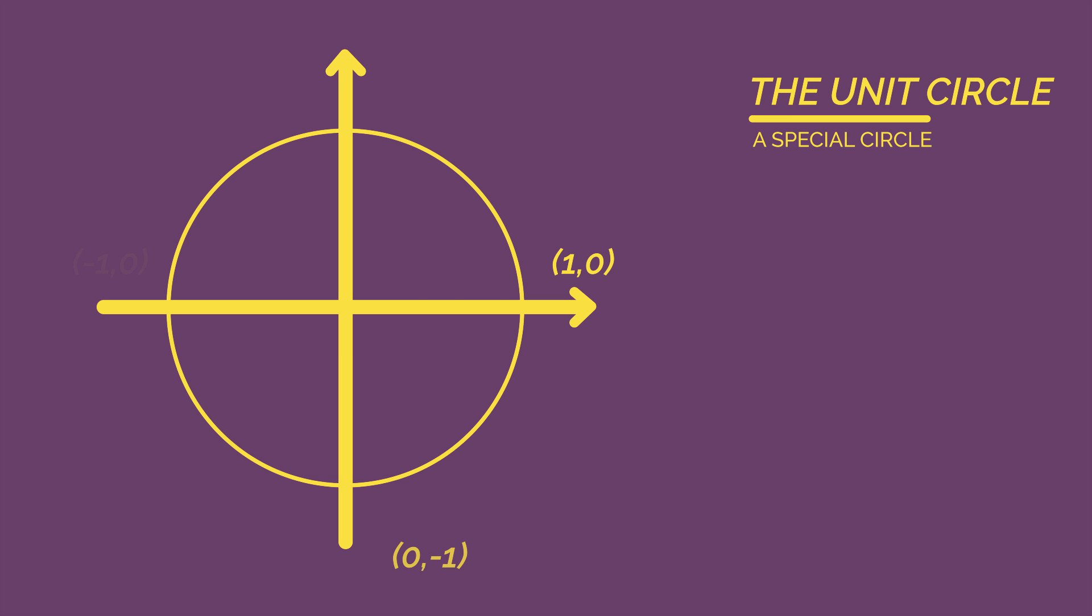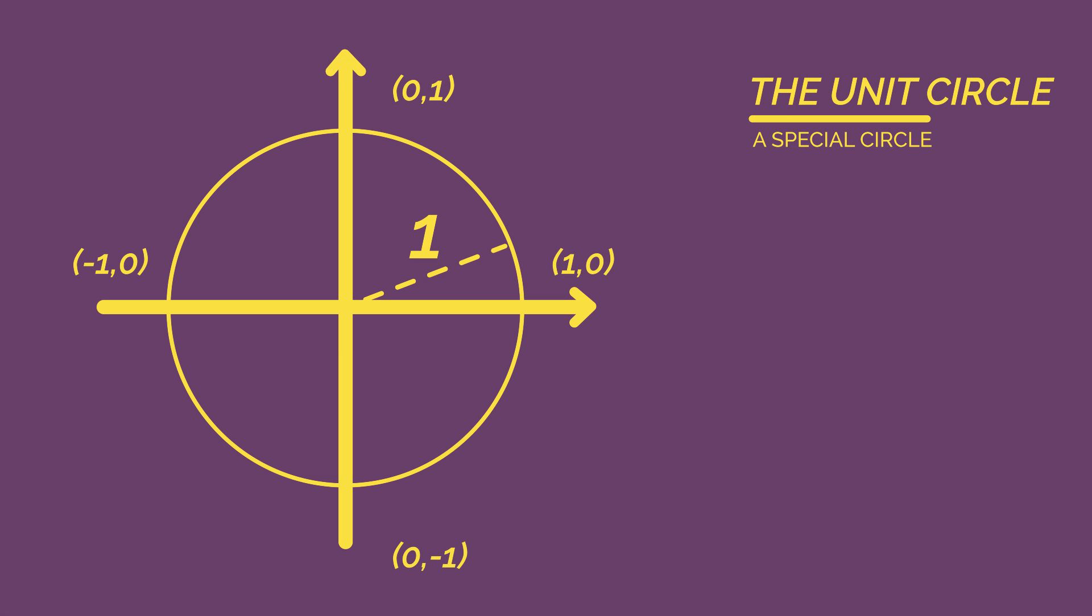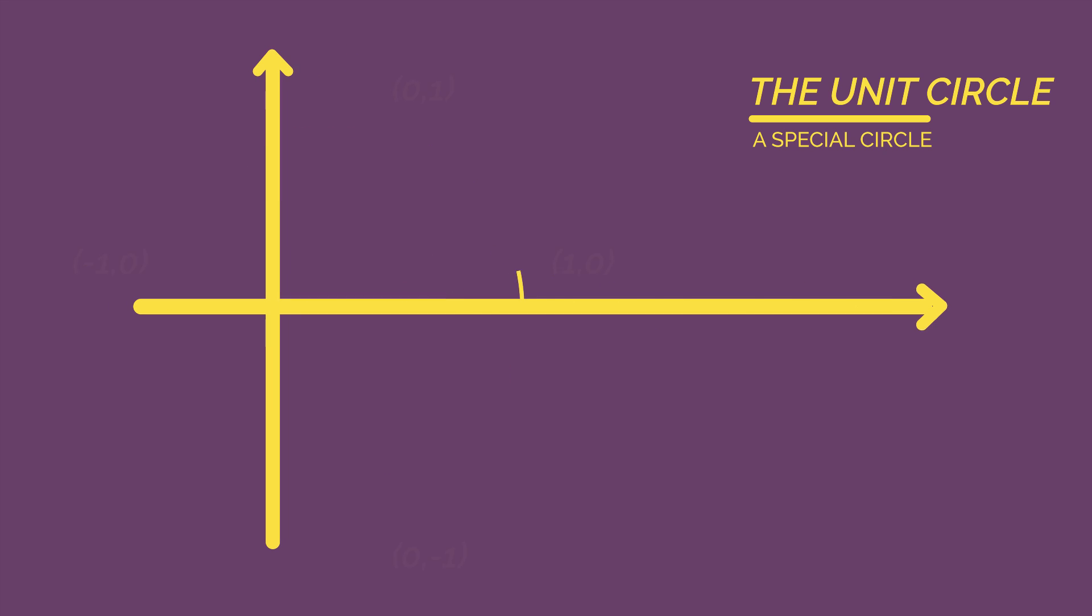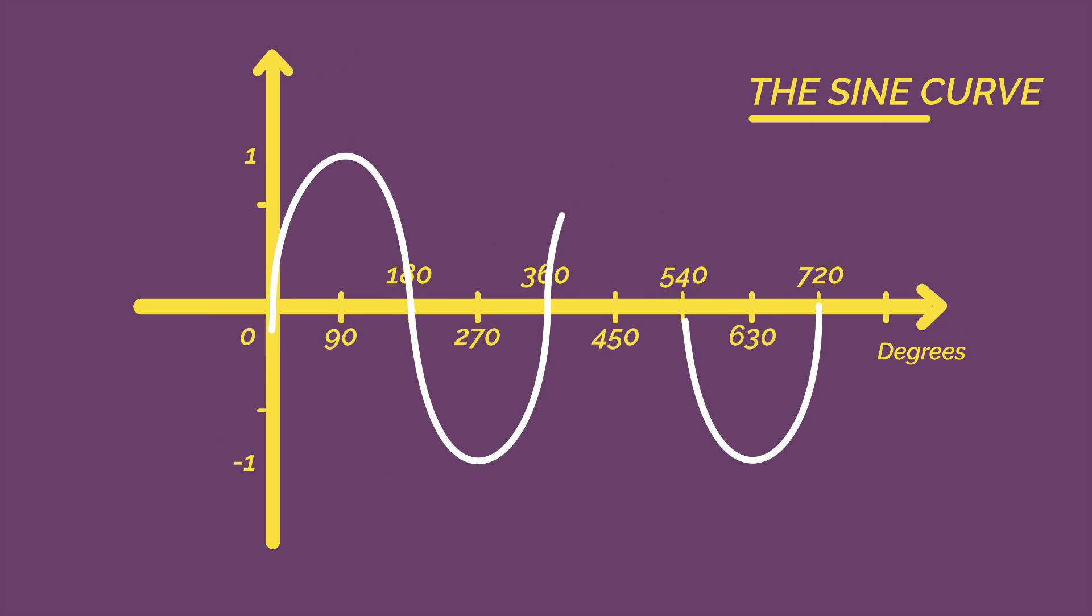So these exact values come from the unit circle, and sine, cos and tan are actually functions that repeat forever. But that's a whole other topic, so we don't need to worry about that. In this video, we're just going to learn what the values are.